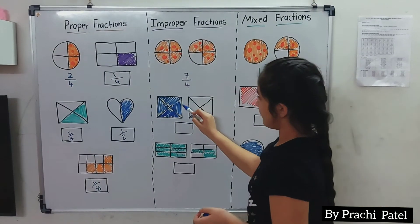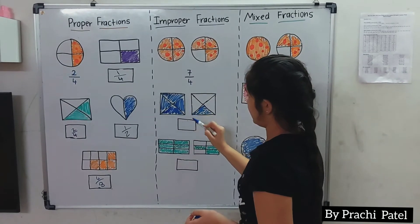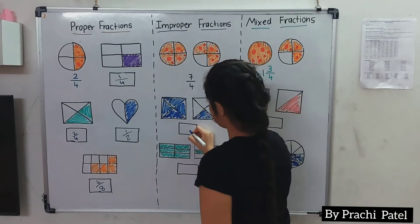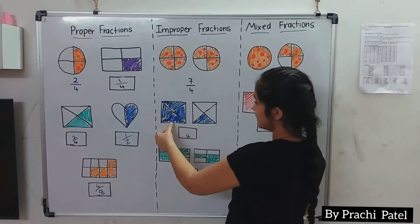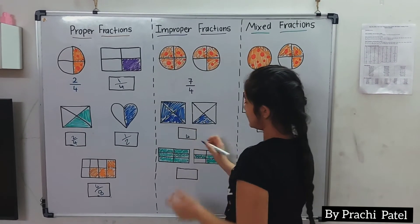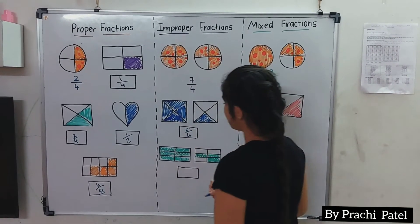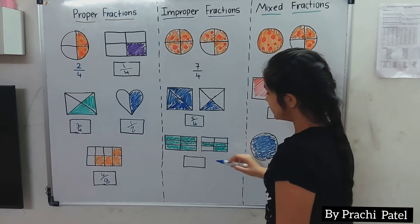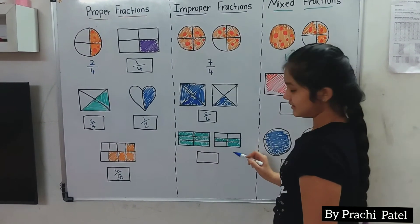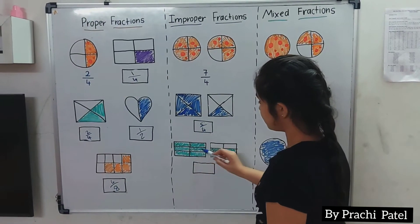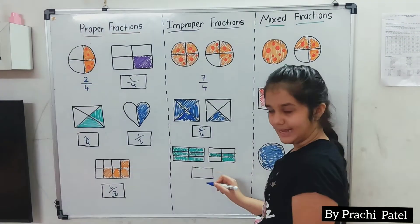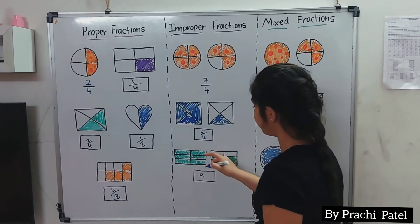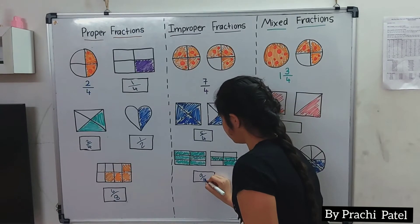Now let's solve this. We have 4 boxes in each, and 5 pieces are colored, so we write 5. Then we have 6 parts, and we color 6 plus 3 more, which equals 9. So we write 9 in the numerator and 6 in the denominator.